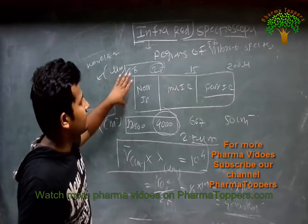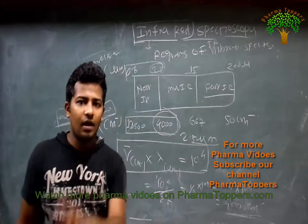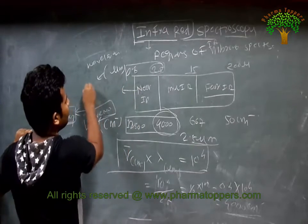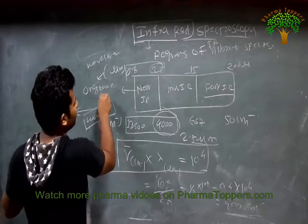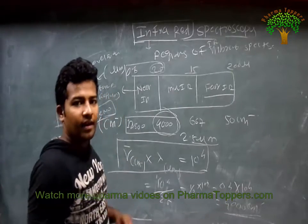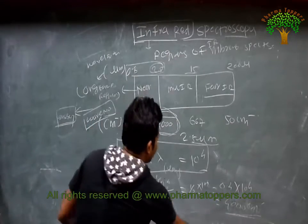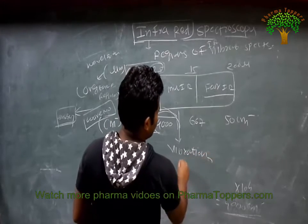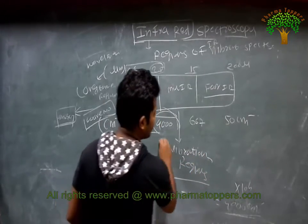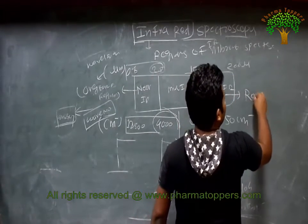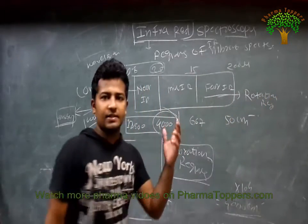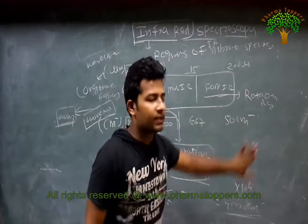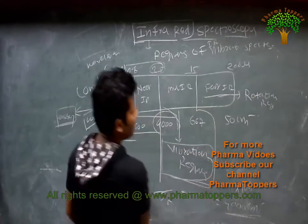These are the simple regions of the IR. Three regions: near IR, mid IR, and far IR. Always remember — these regions are specifically named. Near IR is called the Overtone region. Mid IR is called the Fundamental region — this is the most important region. Far IR is called the Rotational region.